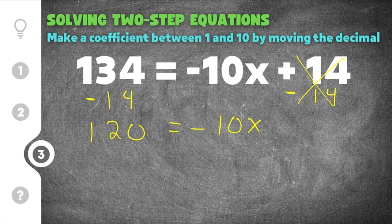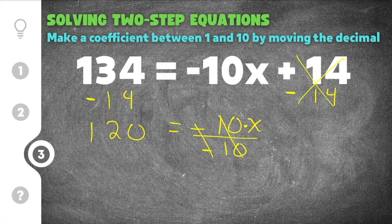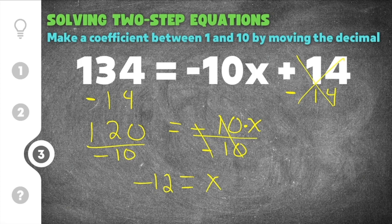Now we need to get x by itself. This is like saying negative 10 times x, so the opposite is dividing by negative 10. If the coefficient is negative you must include the negative when you divide, so that both the negative and the 10 cancel, leaving just x. We divide the other side by negative 10 as well. 120 divided by negative 10 is negative 12, so the solution to this two-step equation is x equals negative 12.